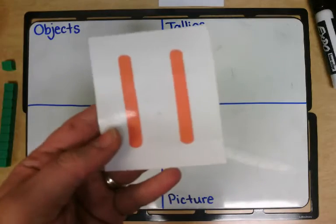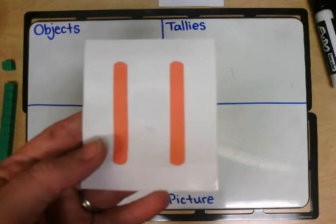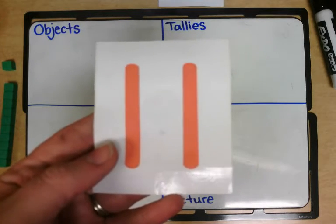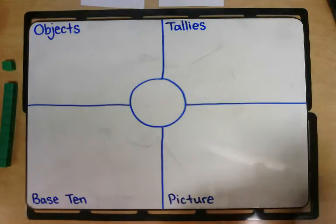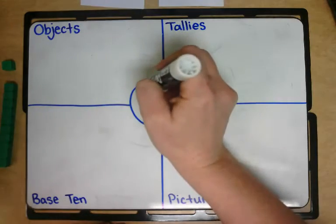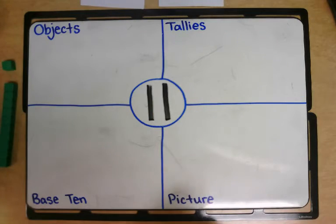We're going to start with this number right here. What number is this? Eleven. Very good. A one and a one is eleven. Now one way that I could show you the number eleven is by just writing the number one, one. The number eleven.